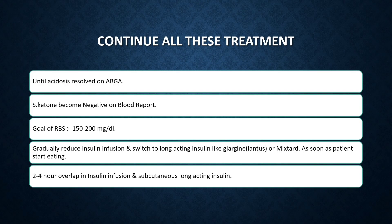Continue all four treatments — IV fluid, insulin, potassium replacement, and if required bicarbonate — until the acidosis is resolved on arterial blood gas analysis and serum ketones become negative. The goal RBS is 150 to 200 mg per deciliter when checking RBS one hourly.